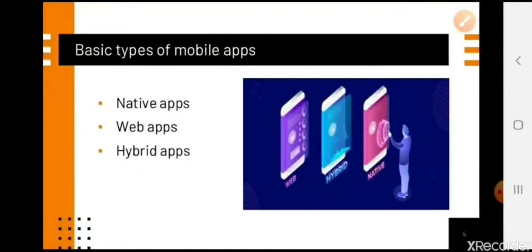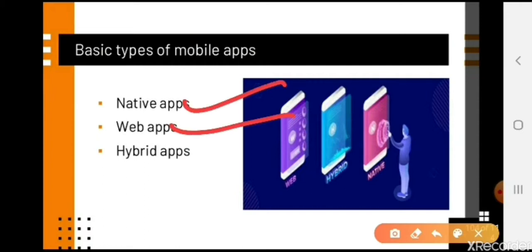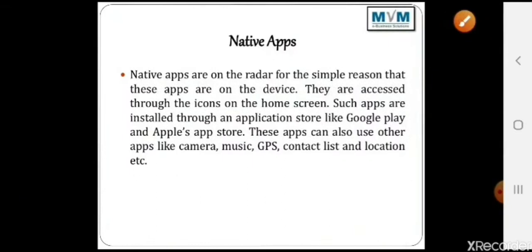All mobile applications have been subdivided into some categories. Those categories are: native apps, web apps, and hybrid apps. These are the three basic categories of mobile apps. Now we will discuss them one by one.